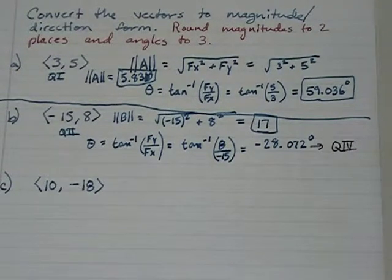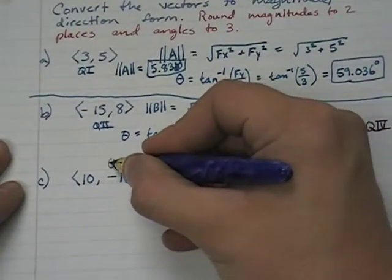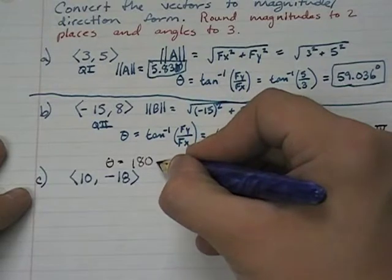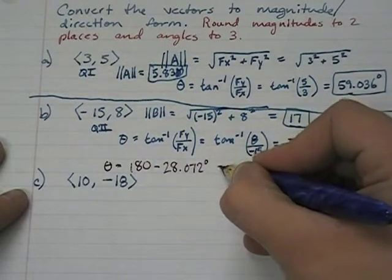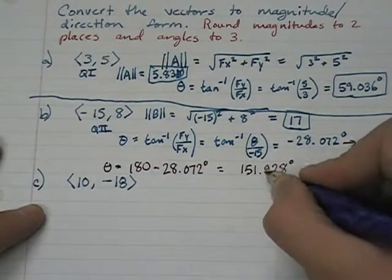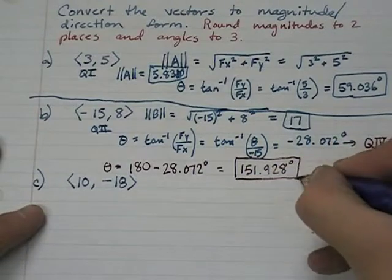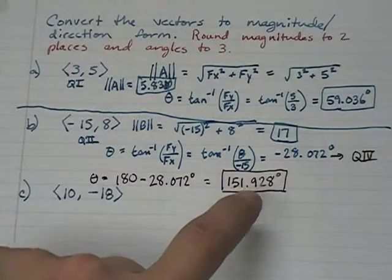It's very clear to me that this vector must be in quadrant 2. So what is this 28 degrees that we have? It's our reference angle. If you have a reference angle of 28 degrees, how do you find your actual angle? Theta is going to be 180 minus 28.072 degrees, and that's going to give us an angle of 151.928 degrees. You have to give a quadrant 2 angle.